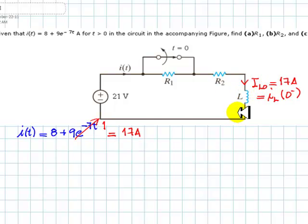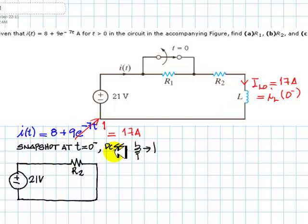That is right. Because in that snapshot it is in this steady state, the inductor can be represented as a wire, the switch is still closed bypassing r1, the circuit at a snapshot at t equals 0- looks like this. And then we know what is this current. This current is 17A.